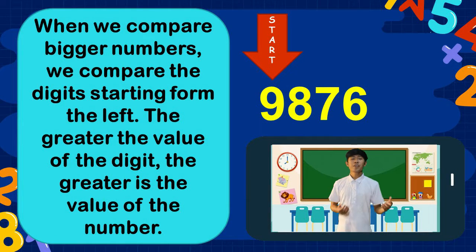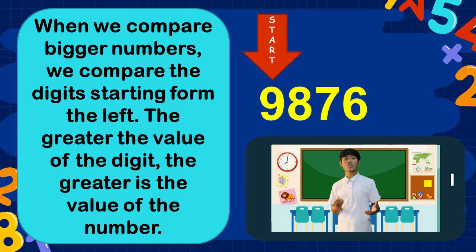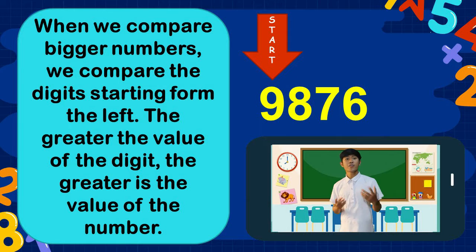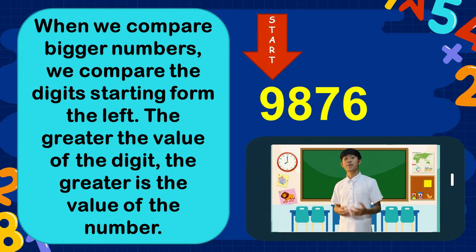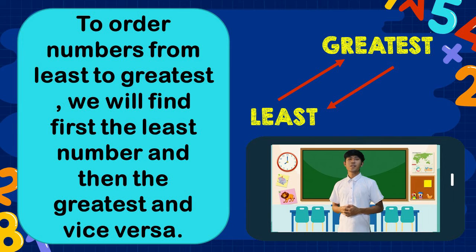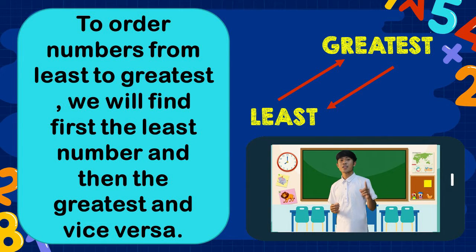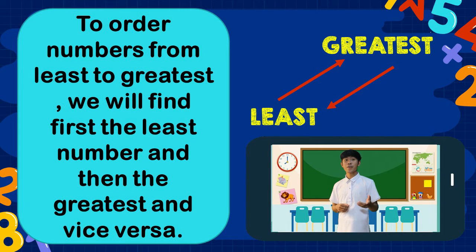We proceed to our lesson to understand why numbers 1 and 2 are not in the required order. When we compare bigger numbers, we compare the digits starting from the left. The greater the value of the digit, the greater is the value of the number. To order numbers from least to greatest, we find first the least number and then the greatest, or vice versa.